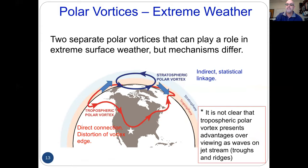It's not clear to me that talking in terms of a tropospheric polar vortex adds anything to the traditional way of talking about it in terms of a jet stream, troughs, or ridges. But the term polar vortex is out there, and rather than saying we shouldn't use it, we just have to make clear which one we're using.